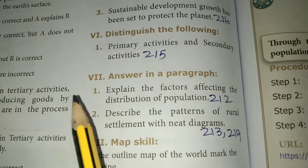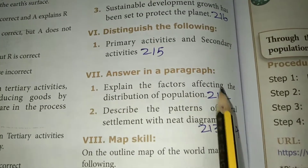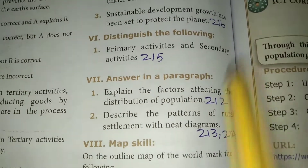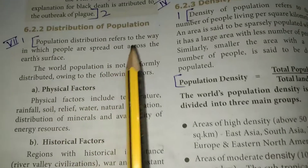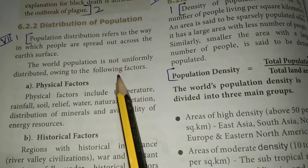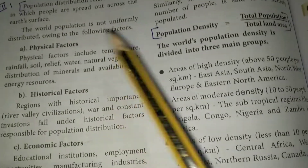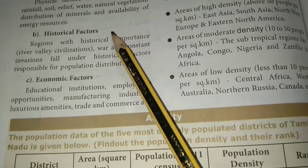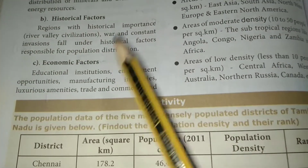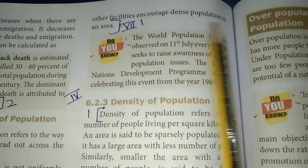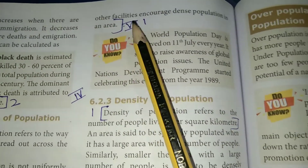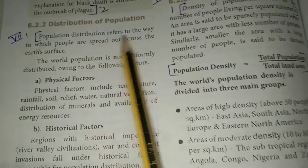Answer in a paragraph. First: Explain the factors affecting the distribution of population. Take page number 212. Under the heading 'Distribution of Population,' mark the first two paragraphs. Then mark Physical factors, Historical factors, and Economical factors. These three sections form the answer. The heading is Distribution of Population.